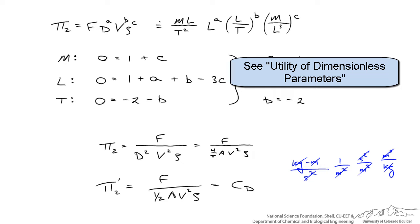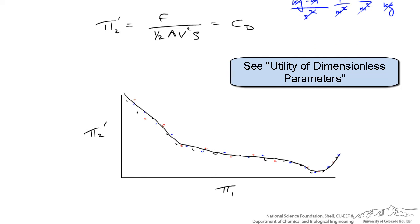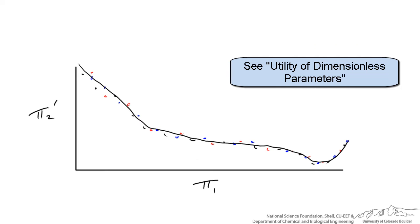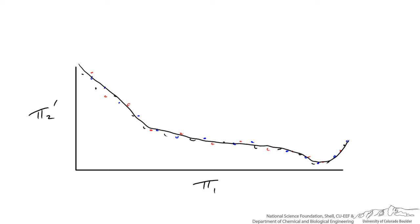So if we make a graph, this is the original graph shown at the beginning: pi 2 prime is the coefficient of drag, and pi 1 prime is the Reynolds number. This means the coefficient of drag is a function of the Reynolds number and the Reynolds number only. For all those different geometries and different fluids, all you need to know is the Reynolds number and some experimental data, and that will give you the coefficient of drag.